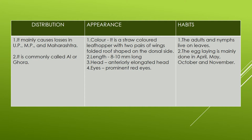Its appearance: its color is straw. The leafhopper color is straw. It has two pairs of wings, which are roof-shaped and folded on the dorsal (back) side. Its length is 10 mm. Its head is anteriorly elongated — the front is elongated. Its eyes are red and prominent, meaning we can see them clearly.